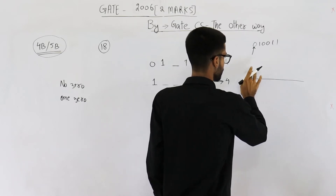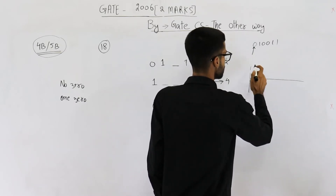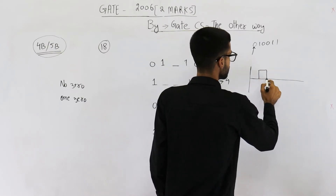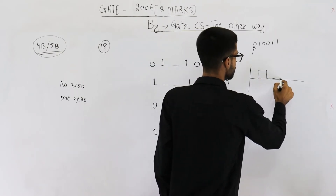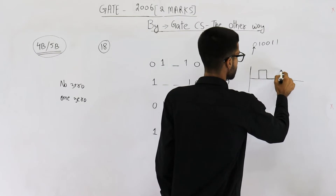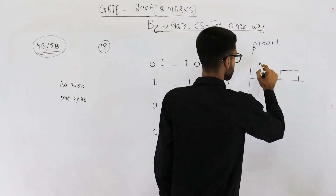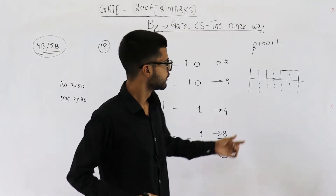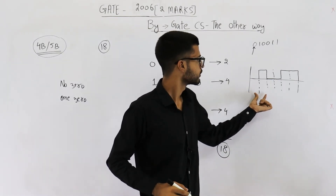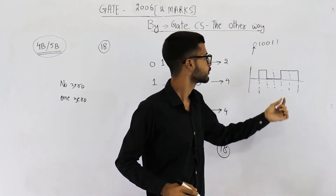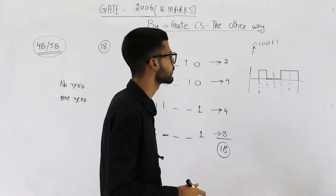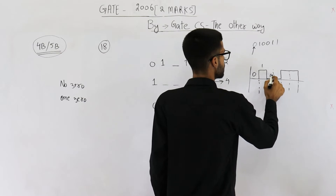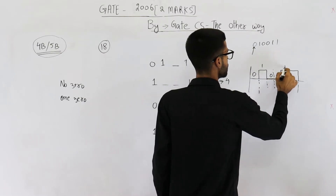The signal goes: zero, then one, then double zero, then double one. These are the clock signals — first, second, third, fourth clock pulse — and in those respective clock pulses, the values are zero, one, double zero, double one.